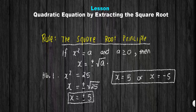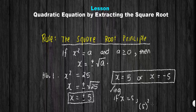If you want to check this, you can simply substitute 5 into the equation. For example, if our x is 5, then we replace x with 5: 5 squared equals 25, and yes, that is equal to 25. So that is our first example.